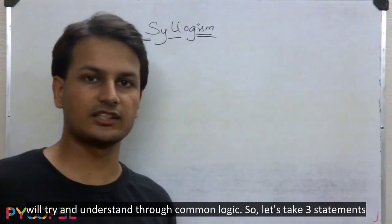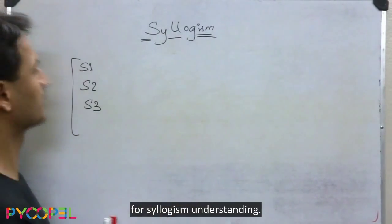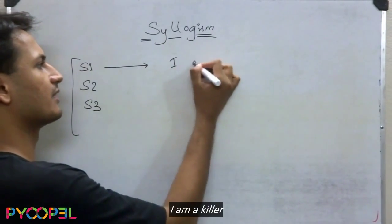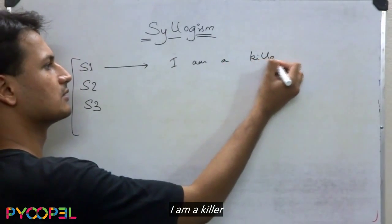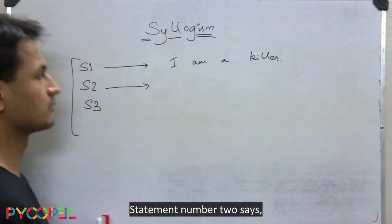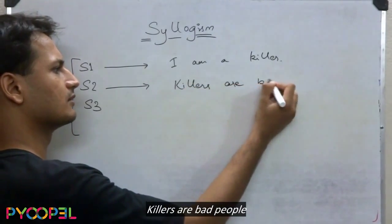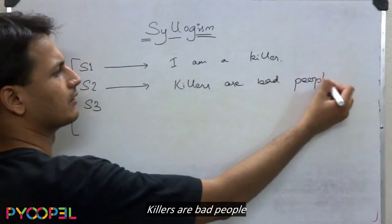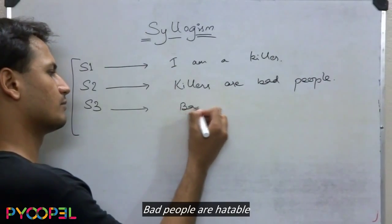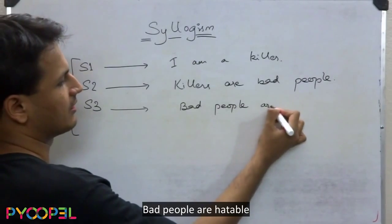Let's take three statements for syllogism understanding. Statement number one says: 'I am a killer.' Statement number two says: 'Killers are bad people.'